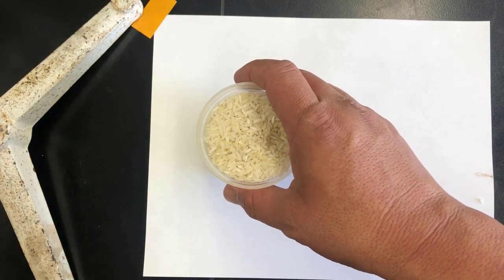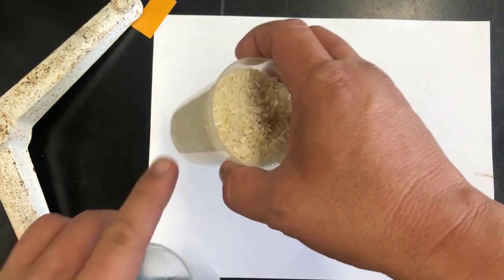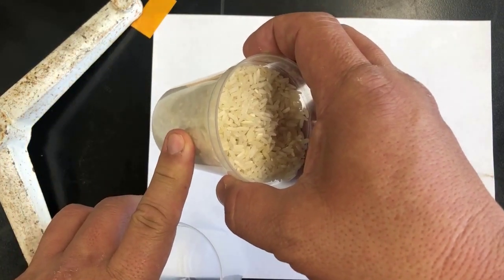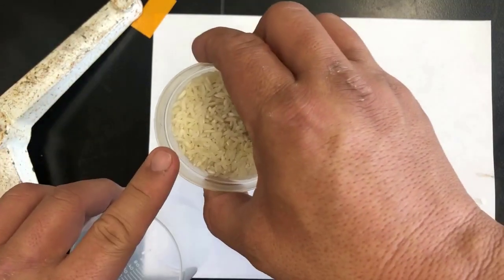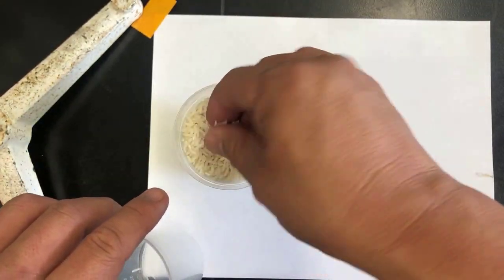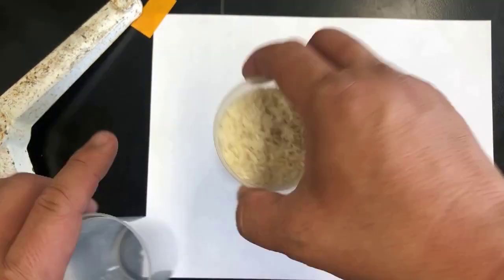We'll get an average mass of a grain of rice, and we're going to have the mass of the rice in the beaker. Then we'll be able to calculate the number of grains of rice inside this beaker.